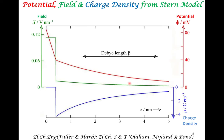We can also look at additional results from the Stern model, such as the potential variation near the electrode. For a positive electrode, the potential decreases adjacent to the interface due to accumulation of negative ions. As you move further away from the electrode-electrolyte interface, the potential drops to zero because the overall medium becomes net neutral. Within a few Debye lengths, this electroneutrality is reached — that is an important conclusion.